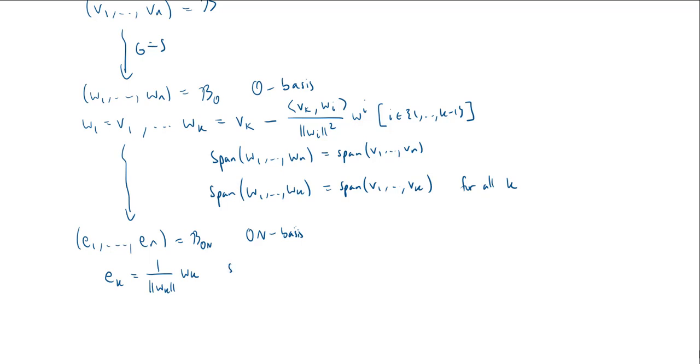And again, this doesn't change the span. So the span of E1 through some EK is still just going to be the span of W1 through WK, which was already the span of V1 through VK. Because again, we're just scaling each vector. When you scale a vector in your list, it doesn't change the span.